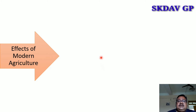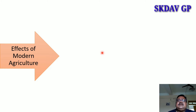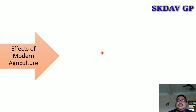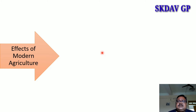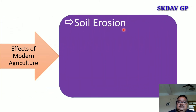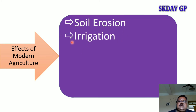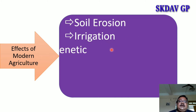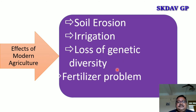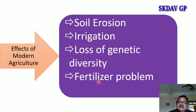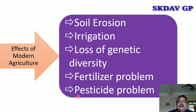The next part is effects of modern agriculture. For sustainable production, modern techniques are used to enhance productivity of different cropping systems under different agro-ecological zones. Adoption of modern agricultural practices has both positive and negative effects on the environment. Some common effects are soil erosion, irrigation problems in crop fields, loss of genetic diversity, fertilizer problems, and pesticide problems.